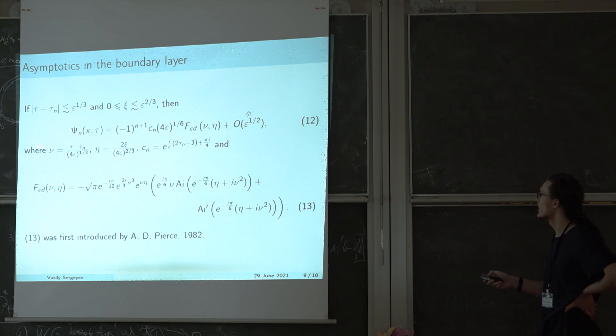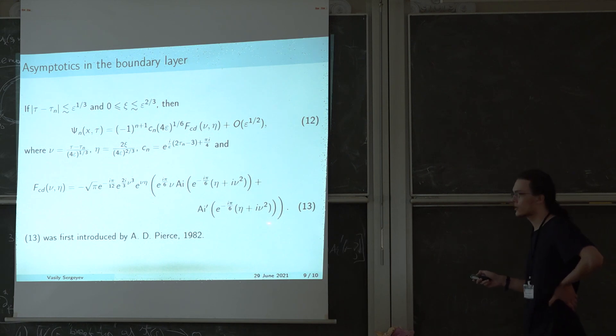Then this formula simplifies into the formula 12, where nu and eta are the boundary layer coordinates. This function f is given by formula 13 and it was first introduced by Alan Pearce when he heuristically studied the acoustic problem.